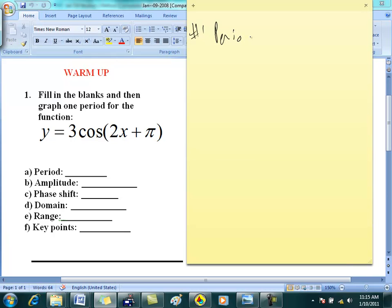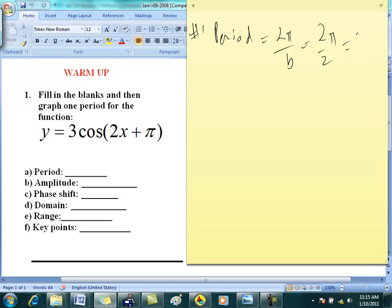Period. Formula: 2π over b. What's b in this case? 2, so it's 2π over 2, so period is π. Is everybody okay on that?